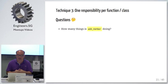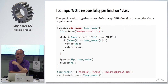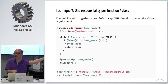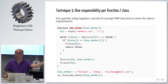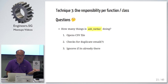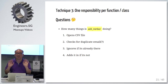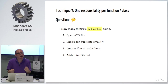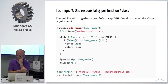But here's a question: how many things do you think this add member function is doing? Three? Let's have a look. How many things is it doing? It's opening the file. It's checking for duplicates — I don't know why the email is in position two. It throws a return false. Otherwise, it injects the new CSV field. Four things! Four things this function is doing: open the CSV, check for duplicate emails, ignore if it's already there, and add if it's not.